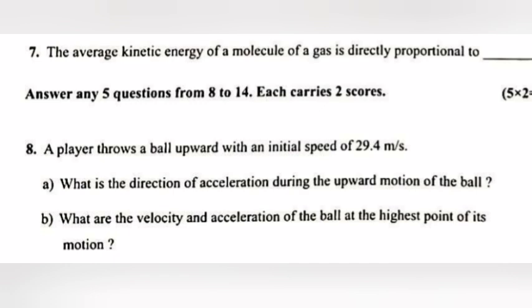Question 8: A player throws a ball upward with an initial speed of 29.4 m per second. (a) What is the direction of acceleration during the upward motion of the ball? (b) What are the velocity and acceleration of the ball at the highest point of its motion?